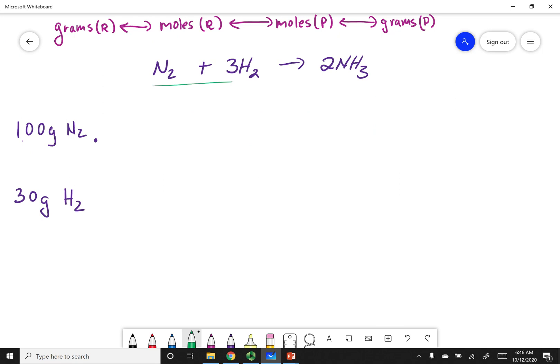Here's my equation, and I've written the conversion flowchart on top. To get from grams of reactant to moles of reactant, I'm going to use the molar mass. To get from moles of reactant to moles of product, I'm going to use stoichiometry. And finally, to get from moles of product to grams of product, I'm going to use the molar mass.